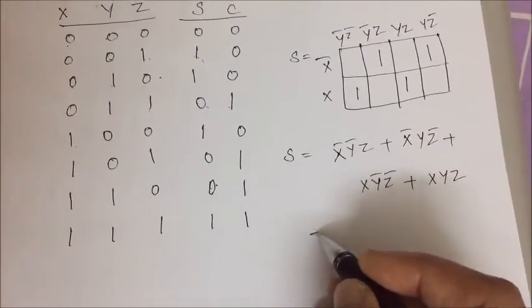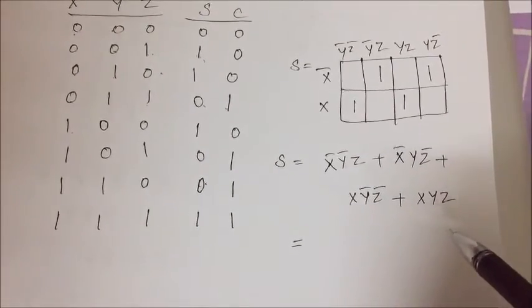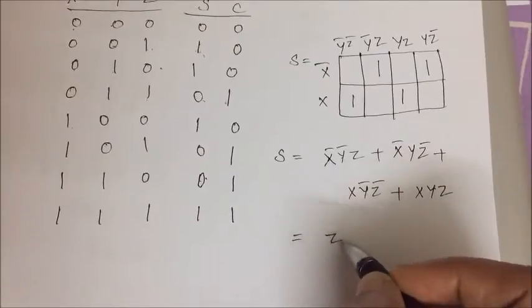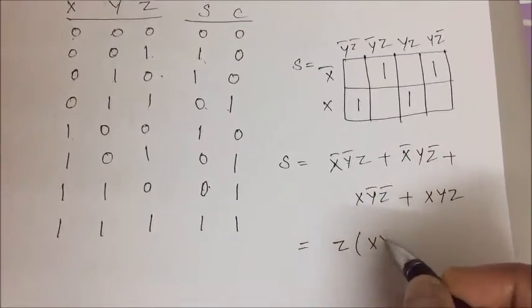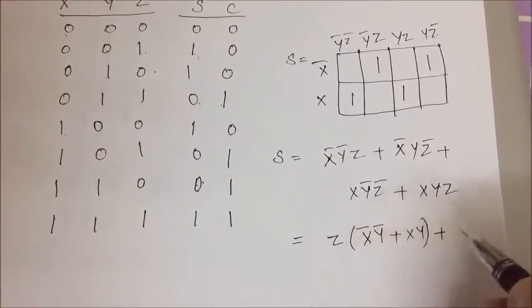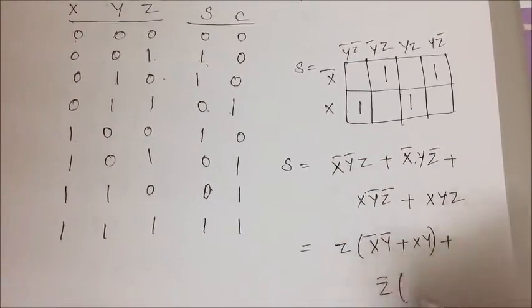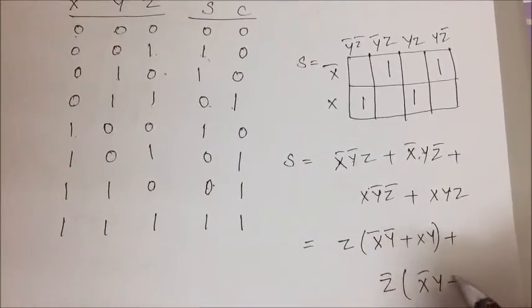Now if you consider first and last term, take z common, we will have x bar, y bar plus x, y plus second and third term common, z bar. If you take x bar, y plus x, y bar.